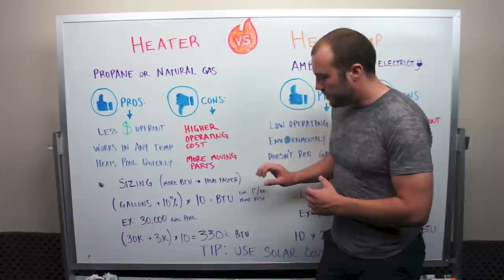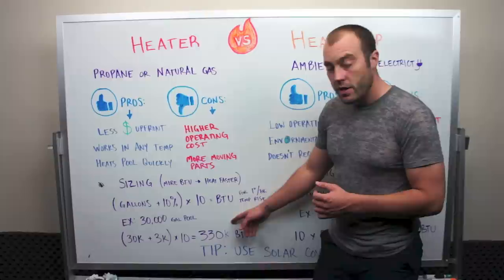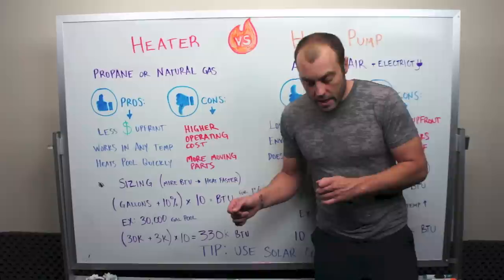It's really just up to you. But assuming one degree just to make it simple, we take the gallons of the pool plus 10% times 10. So in our example, a 30,000 gallon pool: 30K plus 3K times 10 equals 330K BTU. If you get more, it's going to heat faster.